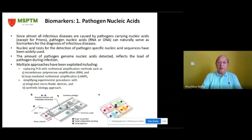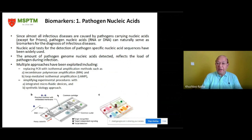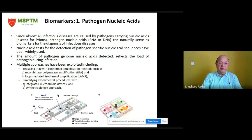In the category of biomarkers, the first is pathogen nucleic acid. Since almost all infectious diseases are caused by pathogens carrying nucleic acids — except for prions — pathogen nucleic acid (RNA or DNA) can naturally serve as a biomarker for diagnosis of infectious diseases. The amount of pathogen genome nucleic acids detected reflects the load of pathogen during the infection. Multiple approaches have been exploited, including replacing PCR with isothermal amplification methods such as Recombinase Polymerase Amplification (RPA) and Loop-Mediated Isothermal Amplification (LAMP), and simplifying experimental procedures with integrated microfluidic devices and synthetic biology approaches.